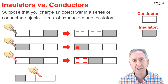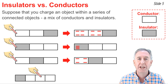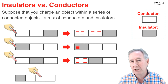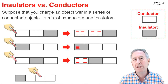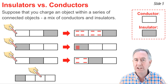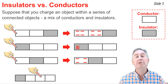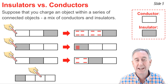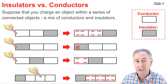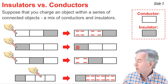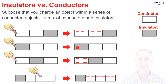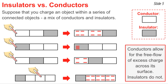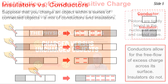In the last example, we have an insulator followed by three conductors, and we touch one of the middle conductors. Excess negative charge enters that conductor and then distributes itself evenly about the surface of the other conductors, but it does not go to the insulator. The point of these illustrations is that conductors allow for the free flow of excess charge across their surface, but insulators do not.